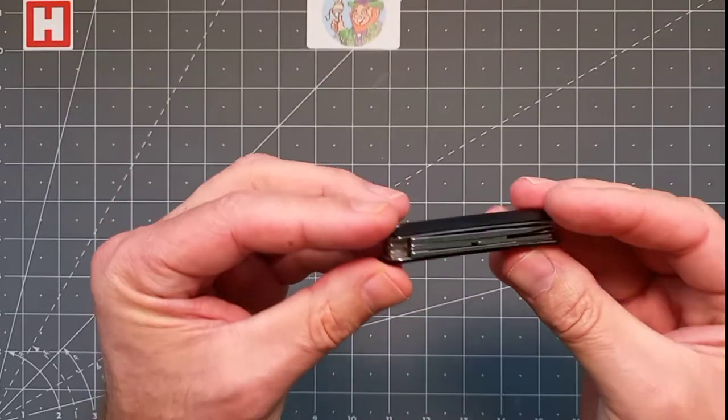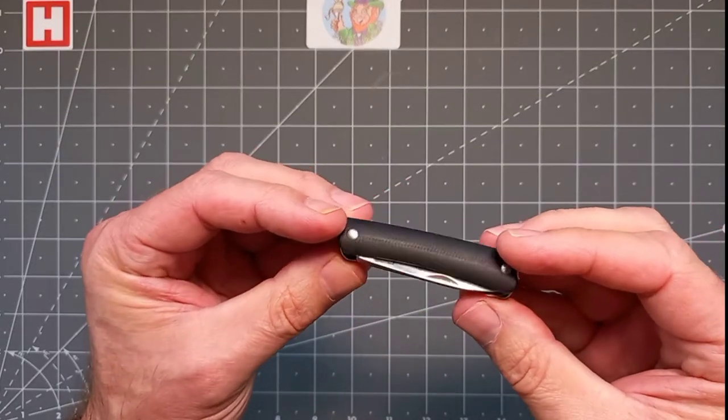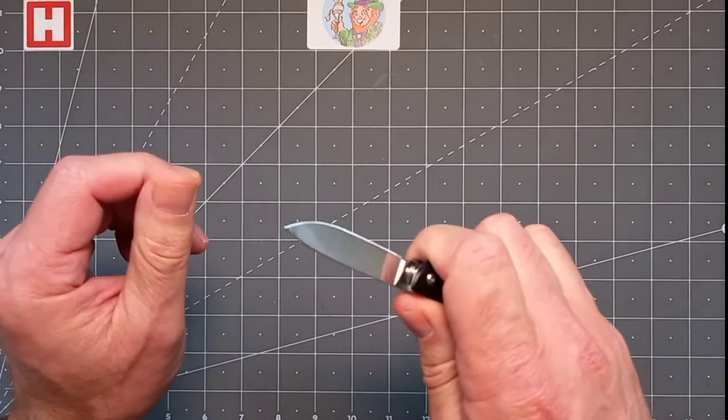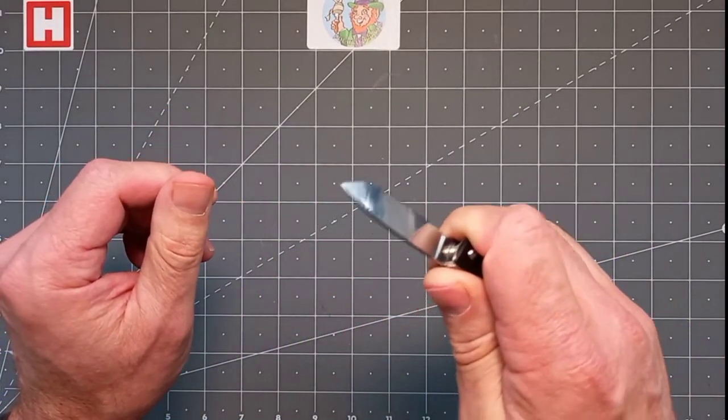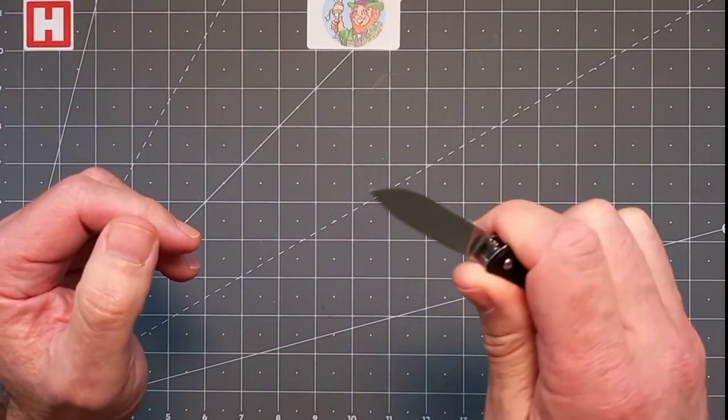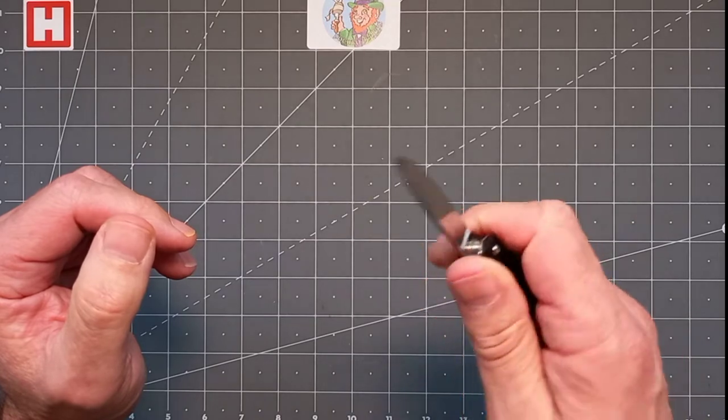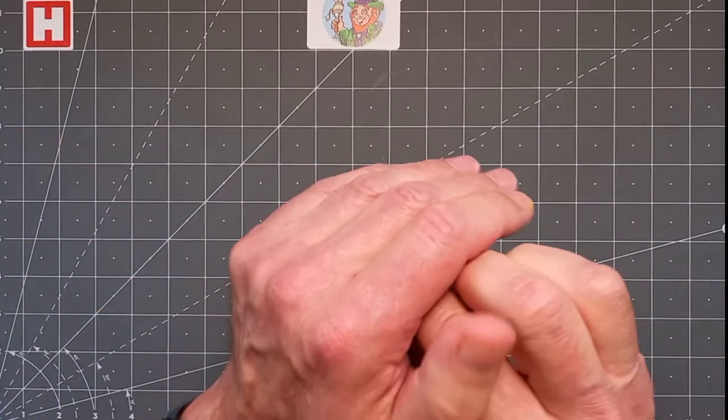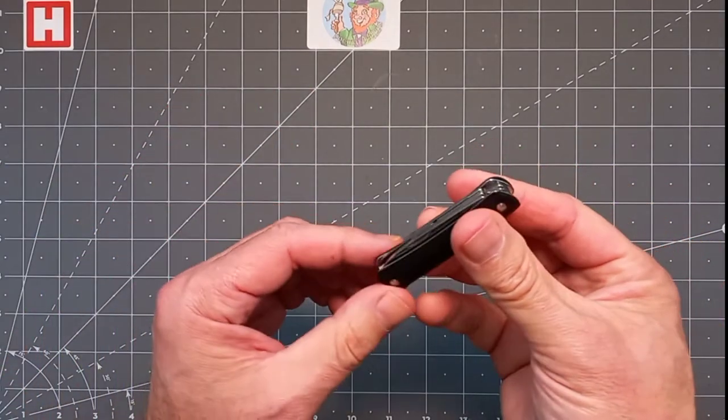Fit and finish overall, it's excellent, it really is. The ergos, pretty good. There's no hot spots I can feel, very good. There's a sharpening choil but no half stop because it's a small knife. You don't need it, not on this size.